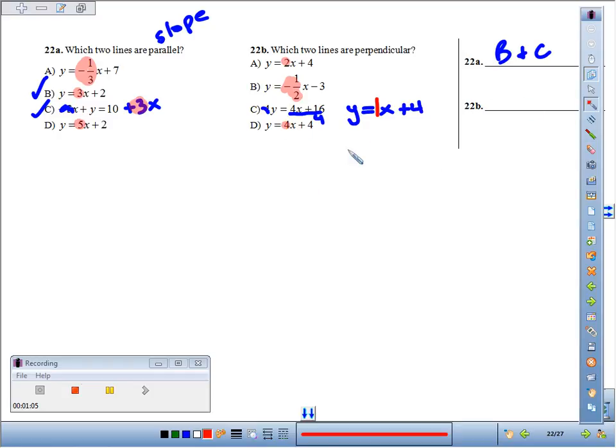So which slopes are opposite reciprocals? Think of 2 as a fraction—it's 2 over 1. Well, its opposite reciprocal would be negative one-half, so A and B are going to be perpendicular.